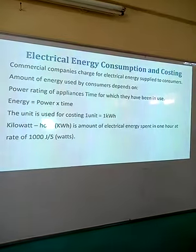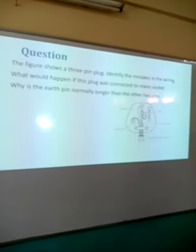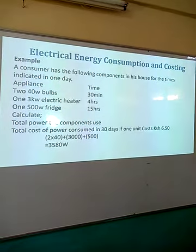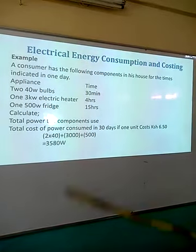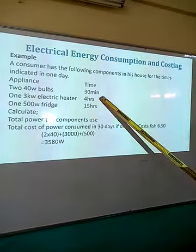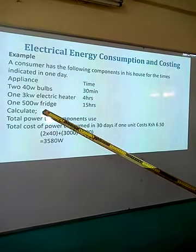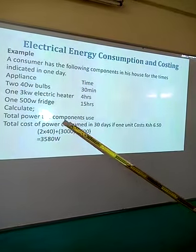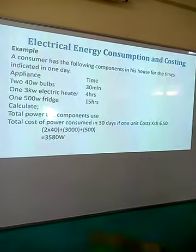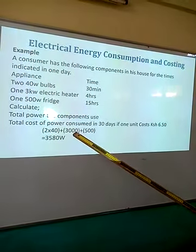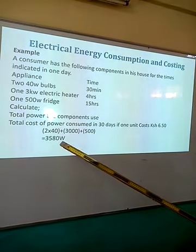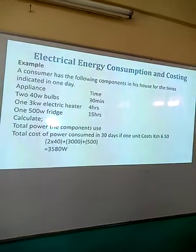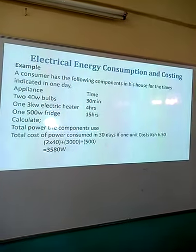Another unit of joules per second is watts. Now, on the board again, we have an example. A consumer has the following components in his house for the times indicated in one day: two 40-watt bulbs operating for 30 minutes, 3 kilowatts for some hours, and 500 watts for 15 hours. We are supposed to calculate the total energy consumed. For 30 minutes, the consumption is 40 watts — in one hour we multiply that by two. Then we have 3,000 watts and 500 watts, giving a total of 3,500 watts. This can be converted into kilowatts, and from this the costing can be done depending on the rating given at that particular time.